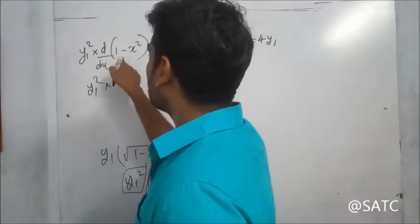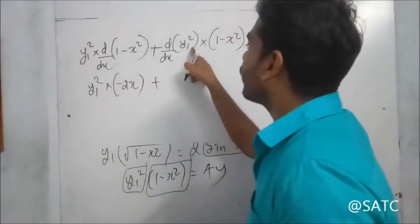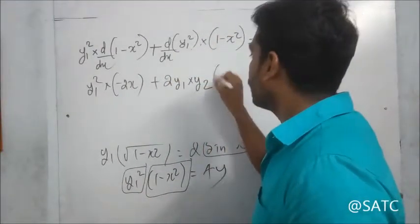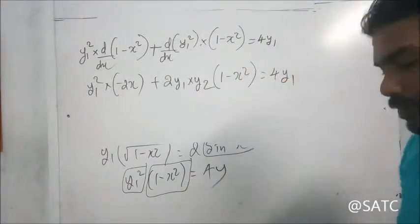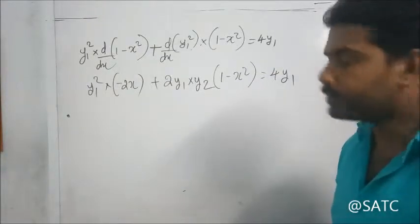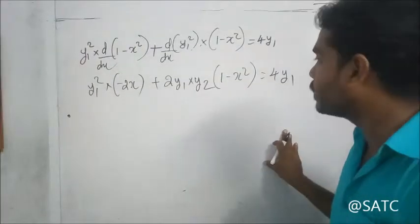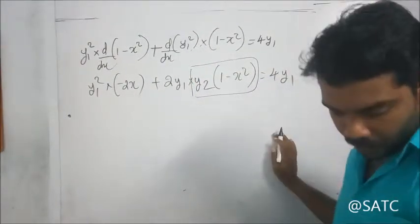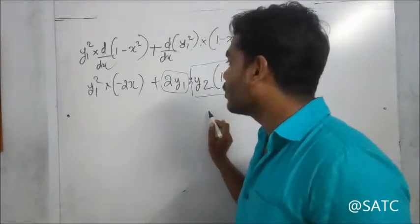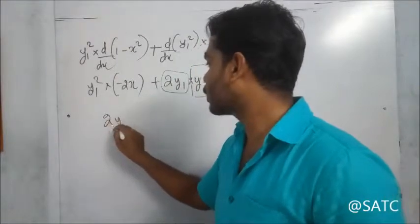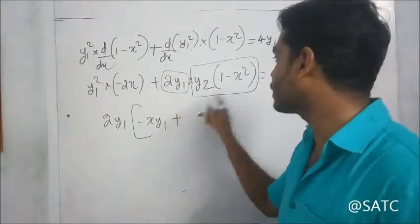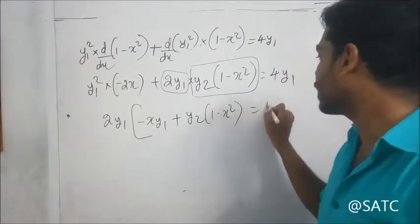Derivative of (1 minus x square) is minus 2x. Derivative of y1 square is 2y1 into y2. So: minus 2x times y1 square plus 2y1 times y2 into (1 minus x square) equals 4y1.